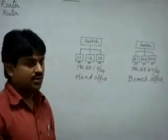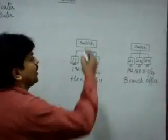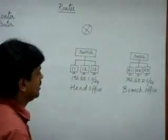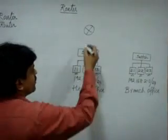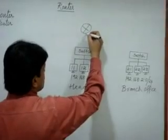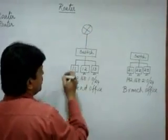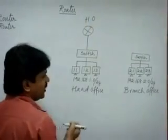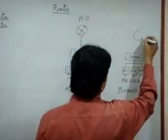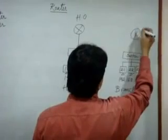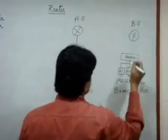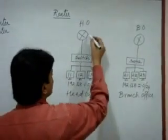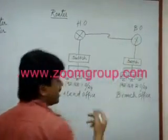To connect these two offices, we need to have a router — one router for the head office and one router for the branch office. We have to connect each LAN to its respective router, and then connect the two routers through some WAN link.